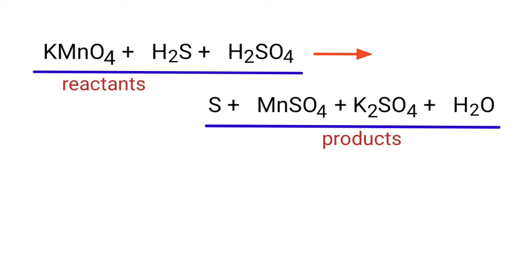In this equation, the reactants are potassium permanganate, hydrogen sulfide, and sulfuric acid. The products are sulfur, manganese sulfate, potassium sulfate, and water.